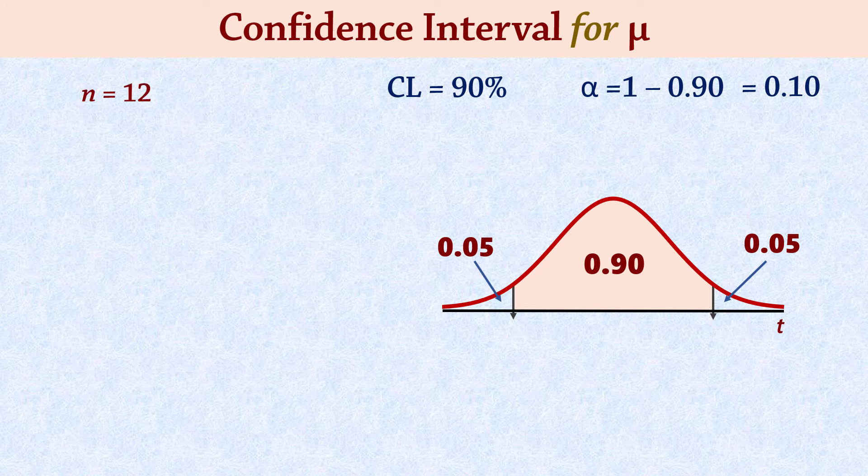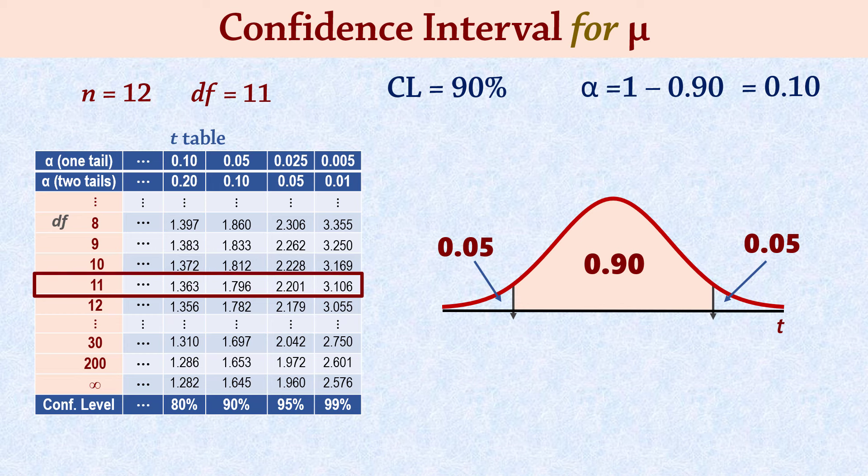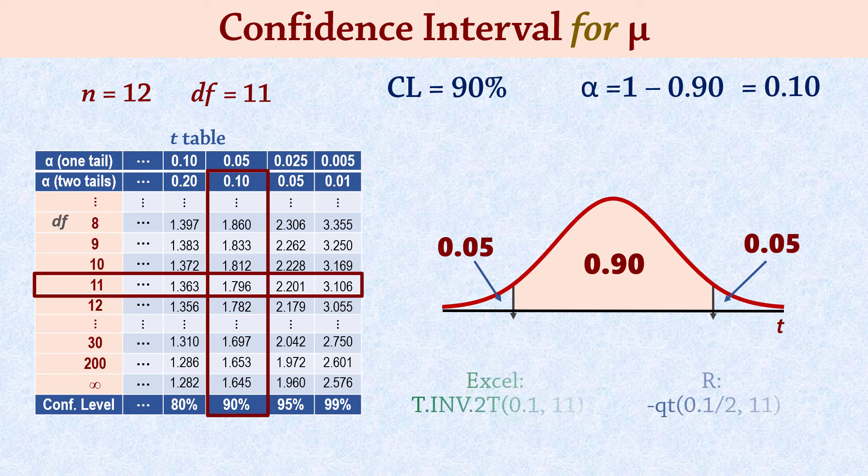Suppose we have a sample size N equals 12. Then the degrees of freedom N-1 will be 11. On the T table, at 11 degrees of freedom, we can look up 0.05 in one tail or 0.10 in two tails or 90% confidence if we have it. The corresponding critical value will be 1.796, which will be negative for the left tail here and positive on the right.